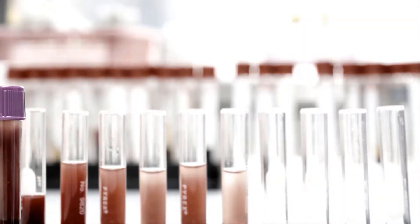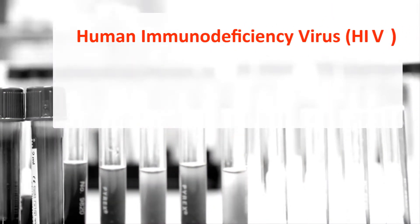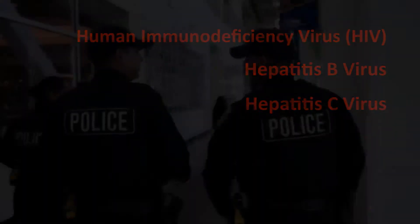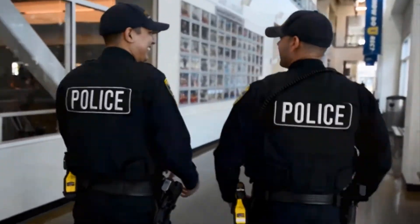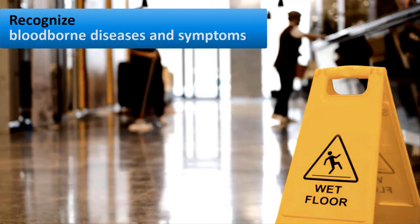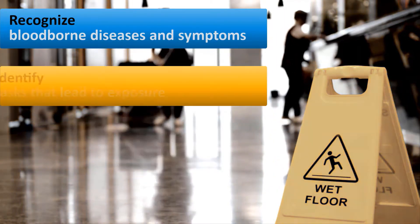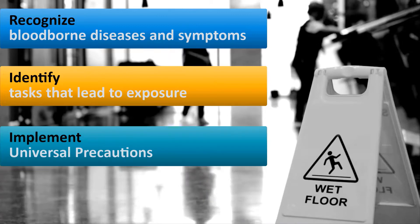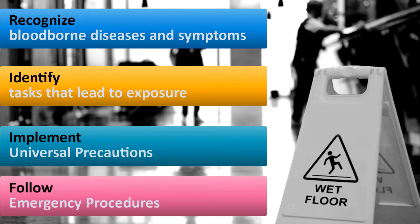Examples of bloodborne pathogens include human immunodeficiency virus (HIV), hepatitis B virus, and hepatitis C virus. There are steps you can take to help prevent exposure and keep you safe at work: recognize bloodborne diseases and symptoms, identify tasks that lead to exposure, implement universal precautions, and follow emergency procedures.